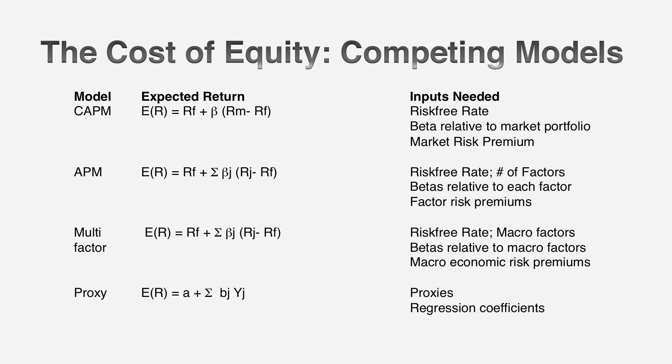If you look at the different risk and return models in finance, the traditional models are all based on the premise that the marginal investor is a diversified investor. Because that marginal investor is diversified — some kind of institutional investor owning tens or hundreds of stocks — the risk they see in a company is the risk that it adds to a diversified portfolio. The standard model is the capital asset pricing model, the CAPM. In the CAPM, the risk of an investment is captured with one number — beta — and the expected return becomes a risk-free rate plus beta times a risk premium for an average risk investment.